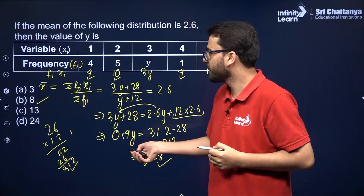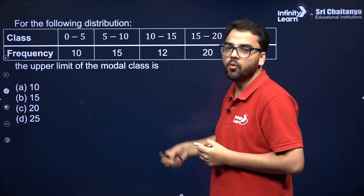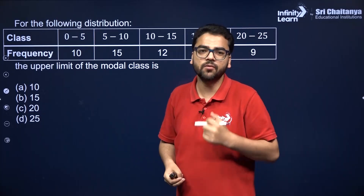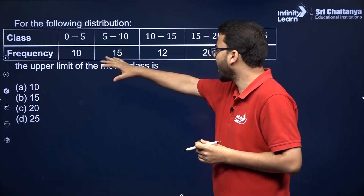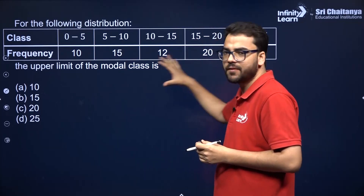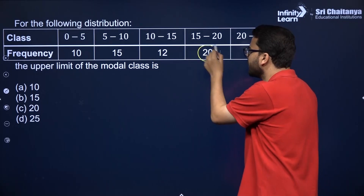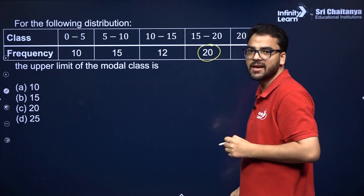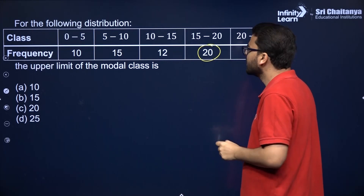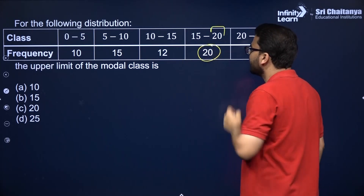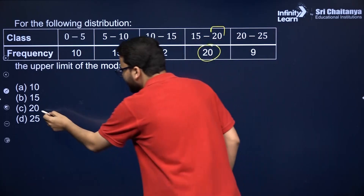Let's take the next question: find the upper limit of the modal class. The modal class is the class interval having the maximum frequency. As you can see, the class interval with maximum frequency is 20, so the upper limit of that class interval is also 20. Therefore, the answer is 20.